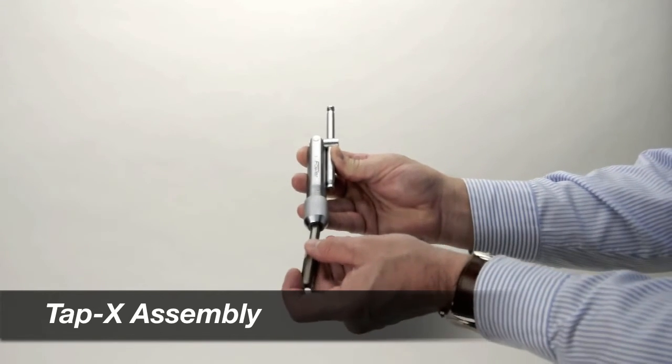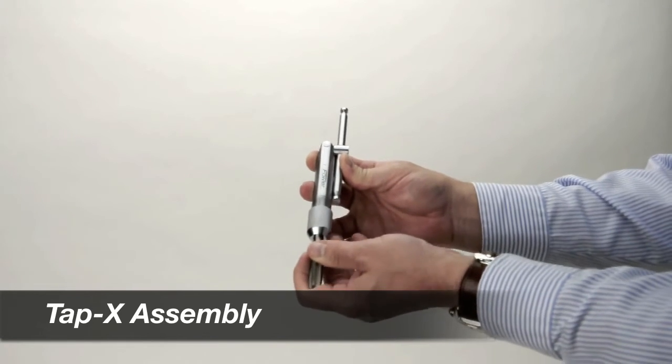Insert the desired tap into the collet opening and while holding the tap, tighten the knurled sleeve a few turns more.